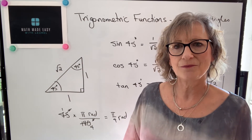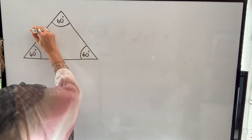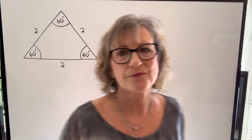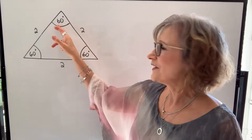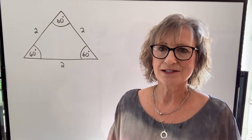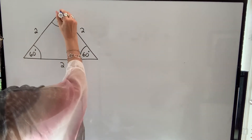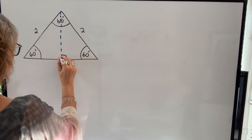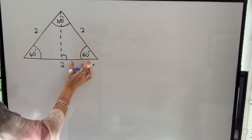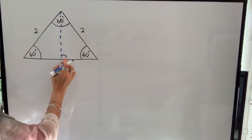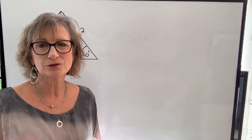Now let's take a look at the other two special angles. I'm starting with an equilateral triangle, which means all sides are equal — I'm going to let each side be two units. In any triangle the three angles add up to 180 degrees, and in an equilateral triangle all angles are equal, so they all have to be 60 degrees. I'm going to bisect this top angle, making it 30 degrees on each side. Because of a geometry property of equilateral triangles, that bisector also bisects the base — giving one unit on each side — and it forms a right angle with the base.